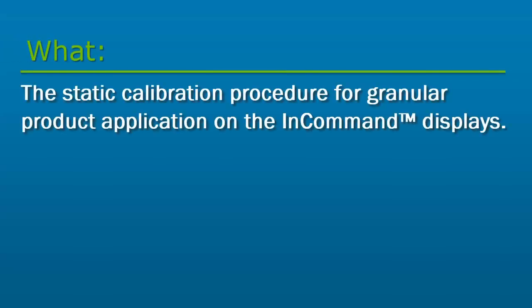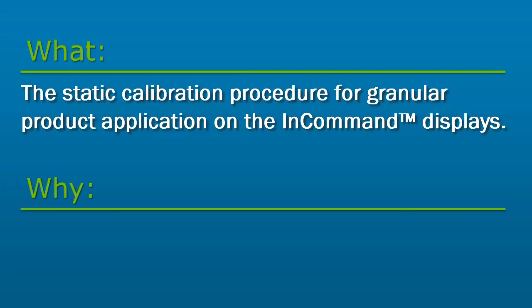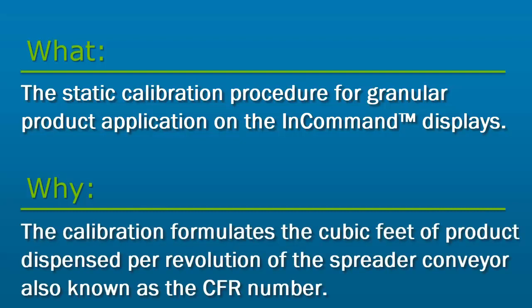In this video, we will cover the static calibration procedure for granular product application on the in-command displays. When a new product is loaded into an operation, the display needs to know the specific application rate for that product. This rate is determined by the number of cubic feet of product dispensed per revolution of the conveyor in the spreader bin. To determine the cubic feet per revolution, or CFR value, a static calibration is performed.